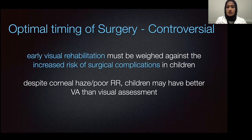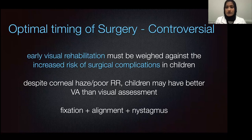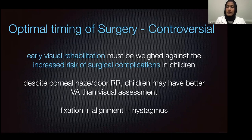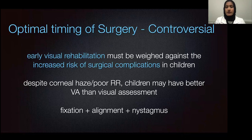Should we be doing surgeries in these patients despite all the surgical complications that can develop? Things I always look at are fixation in one eye or both, how the eyes are aligned, whether there is sensory exotropia or sensory esotropia, and whether there is any nystagmus. If all of these are essentially normal, I tend to wait on the surgery if I can. However, if fixation is poor, if there is a significant strabismus, if there is a sensory nystagmus, those would be reasons to do surgery earlier rather than later.